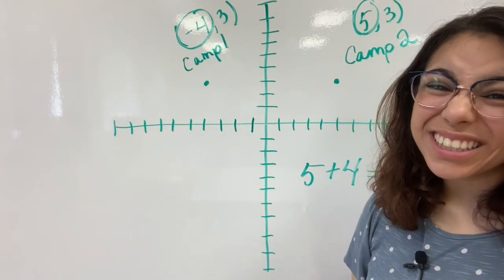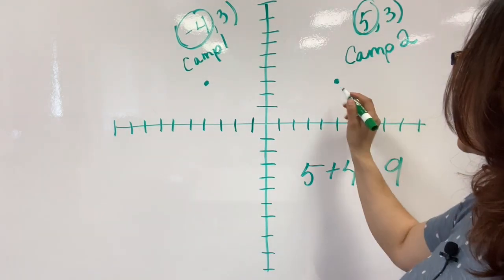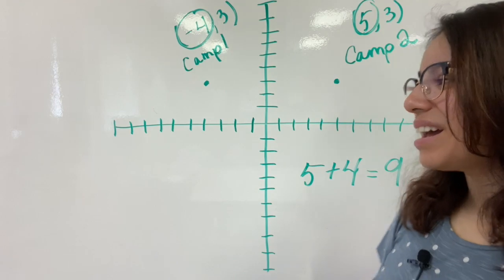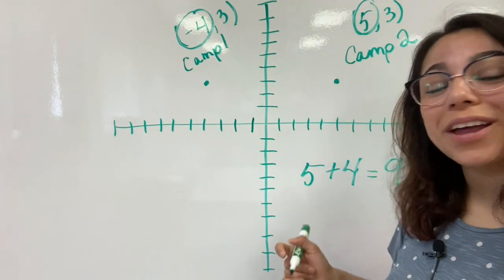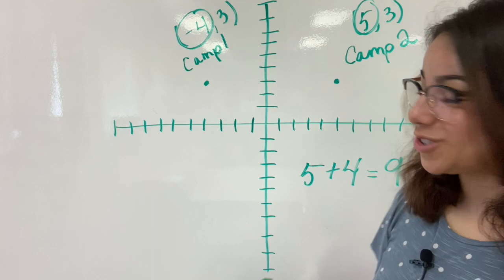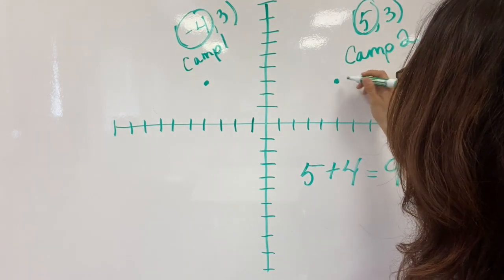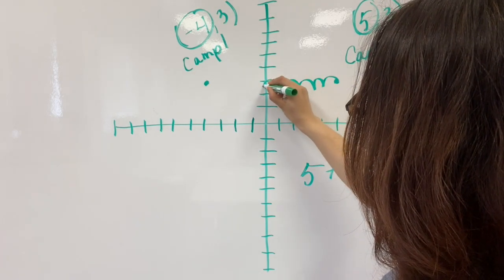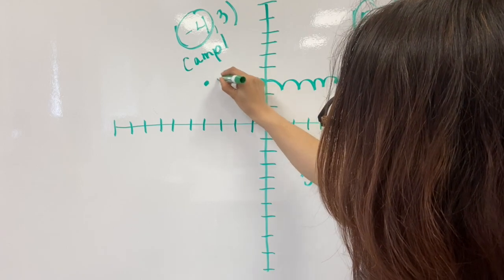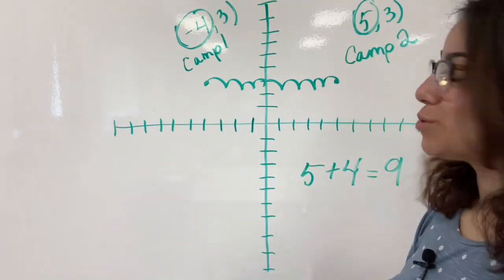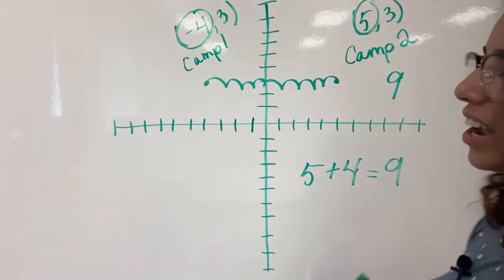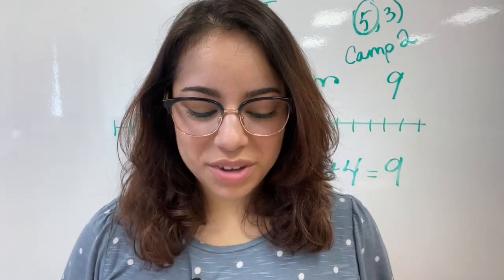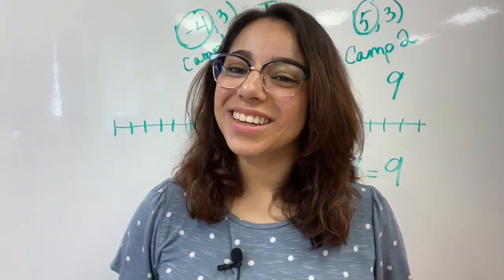The other way, and honestly this is my favorite, is to count your loops. I always tell you guys — count your loops. I think this is honestly the easiest, at least for me. Feel free to use whatever method you choose. So here we're on (5, 3), and I'm going to count my bubbles: 1, 2, 3, 4, 5, 6, 7, 8, 9. I have 9 loops, which means they are 9 apart. So the distance from Camp 1 to Camp 2 is 9 miles.